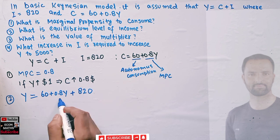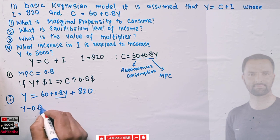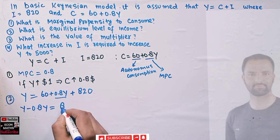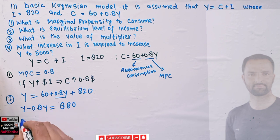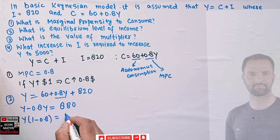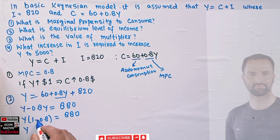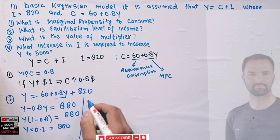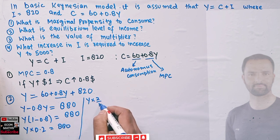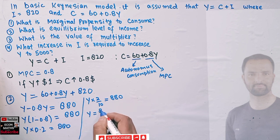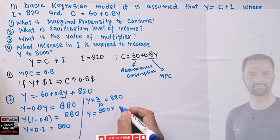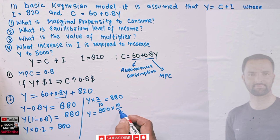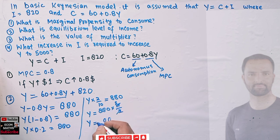Transposing the 0.8Y term: Y − 0.8Y = 820 + 60 = 880. Taking Y common: Y(1 − 0.8) = 880, so Y × 0.2 = 880. Since 0.2 = 2/10, transposing gives Y = 880 × (10/2) = 880 × 5 = 4400 dollars. So our equilibrium level of income is 4400 dollars.